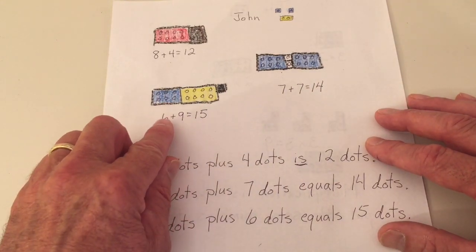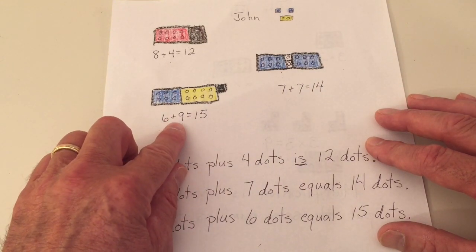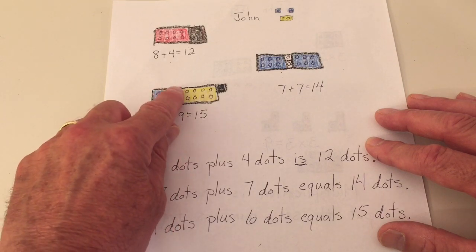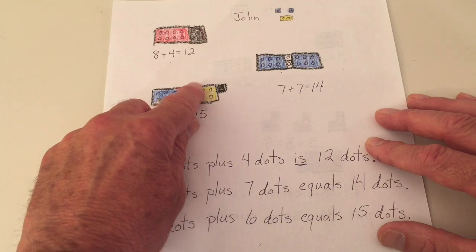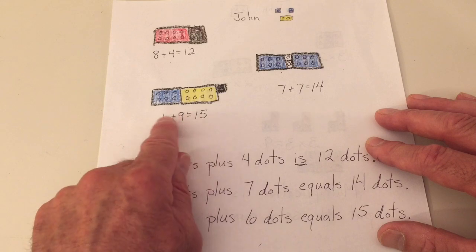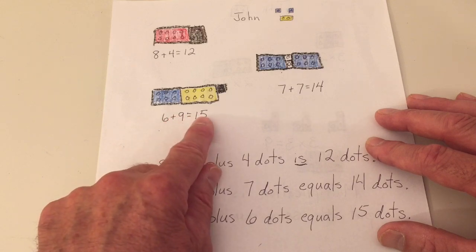The last one we did was six plus nine. Here's six: one, two, three, four, five, six. And nine: one, two, three, four, five, six, seven, eight, nine equals six plus nine equals fifteen.